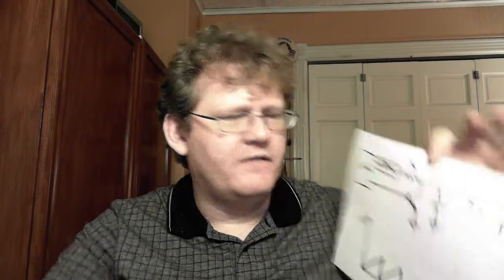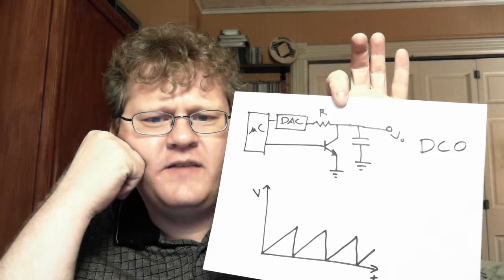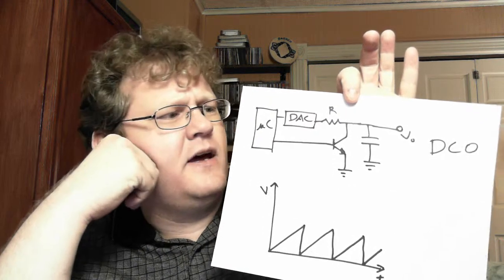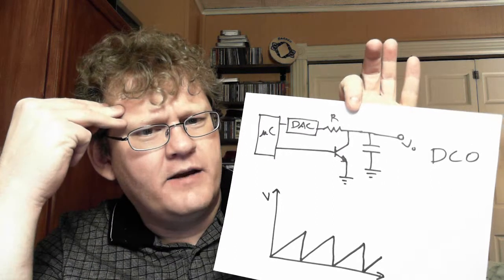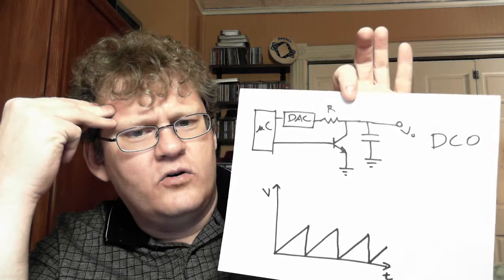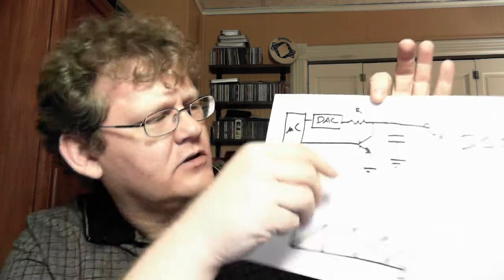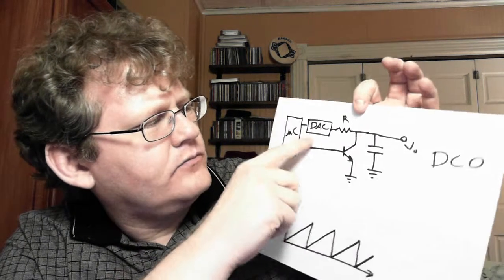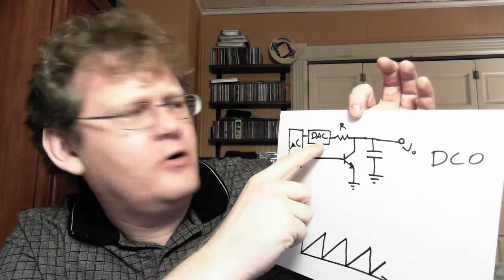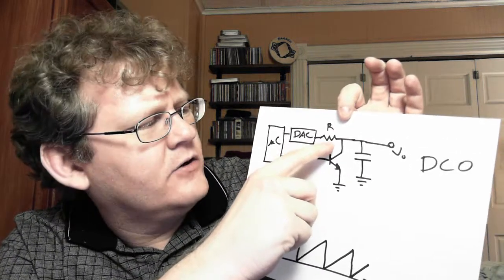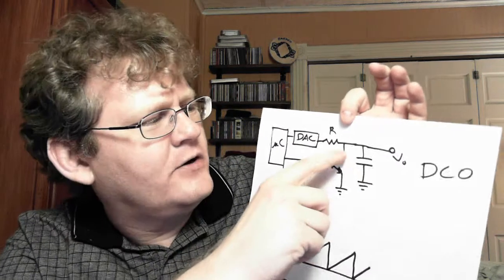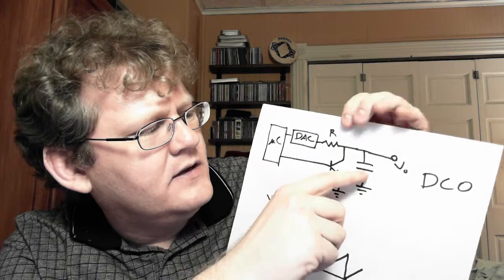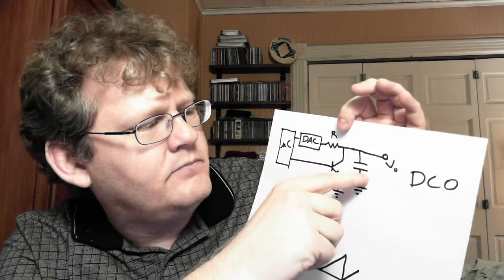So, in the 80s, these DCOs were developed, and because at about that point, they started coming up, they started having available microprocessors that could actually handle the amount of processing they needed. So, you're having a number going through a DAC, a digital to analog converter, through a resistor just to basically convert it into a current.